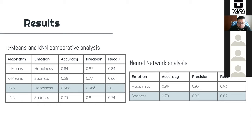Our backpropagation neural network was implemented with 14 neurons on the input layer and one neuron on the output layer. The output layer indicates genuine or acted emotion — zero or one, respectively. We varied the neurons on the hidden layer from three to six neurons, and hyperparameters were chosen through experimentation. The results with the best configurations show good results for both emotions analyzed. We obtained the best result with the neural network for sadness emotion in comparison with K-nearest neighbors, with 92% precision and 82% recall.